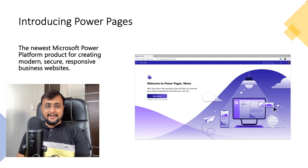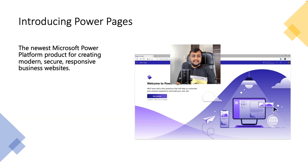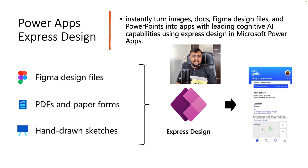In the comment section, mention what is your favorite announcement. The second important announcement is around Power Apps Express Design. Sometimes we imagine: what if I have some handwritten sketches or some PDF or paper forms — is there a way I can upload my file and it will create the app automatically for us? Now this dream can become true with this Build announcement.